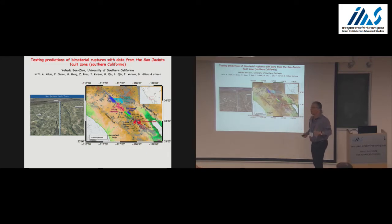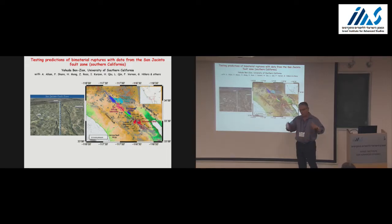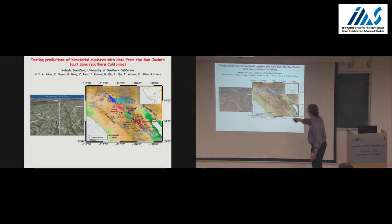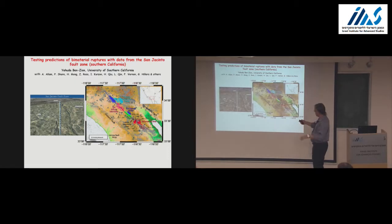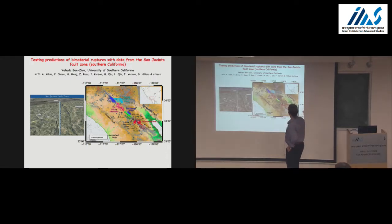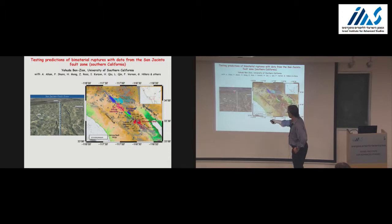For those of you that don't know the San Jacinto, it is the most seismically active part of the San Andreas system in Southern California. This whole collection of faults is the San Andreas system. The San Andreas proper is here. This is the San Jacinto — all the dots with different colors are seismicity epicenters, different colors just to denote different things that are not important here. And in a Google map, the San Jacinto is right here — this big crack.